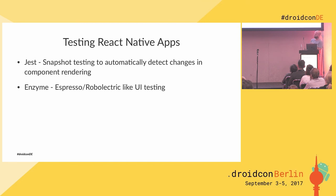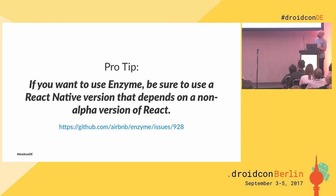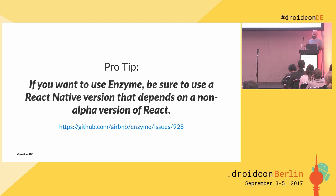Another Airbnb library called Enzyme is very much like Espresso or Robolectric in that it mocks out the rendering and you can click things, assert things, and so on. In working with those I came across something very important: Enzyme is a React testing library and they've committed to only supporting release versions of React. An interesting thing about React Native is they're using an alpha version of React. The solution from the same kind of GitHub issue discussion we saw before is basically to stay on a lower version of React Native that's not using an alpha version of React.